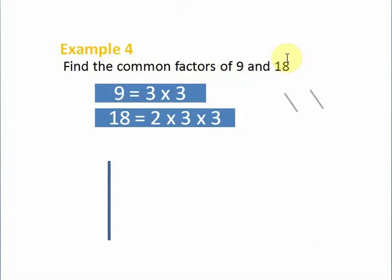Example 4: Find the common factors of 9 and 18. You could remember that in our previous video we only dealt with one number. Now, to find the common factors of 9 and 18, we express 9 as a product of its primes.